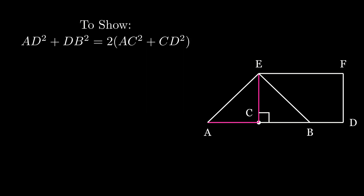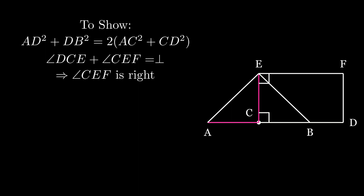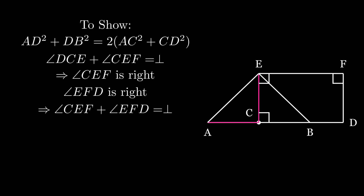Now notice that AD and EF being parallel and CE falling on them. We know from Proposition 1.29 that angle DCE plus angle CEF are equal to two right angles. Angle ECD is a right angle, therefore angle CEF is also a right angle. Angle EFD will also be a right angle, therefore angle CEF plus angle EFD are two right angles.